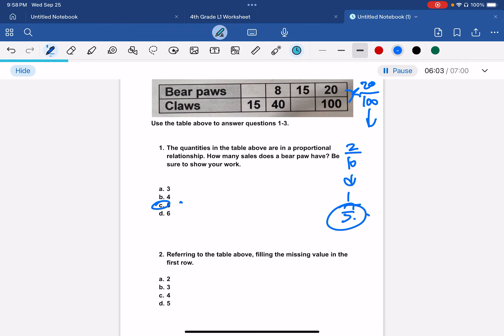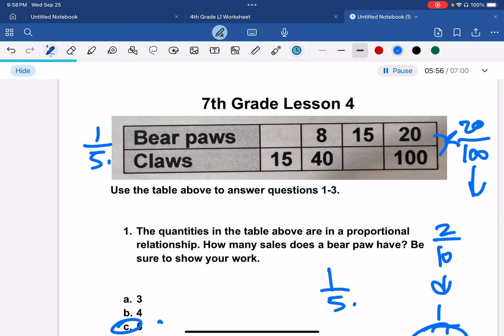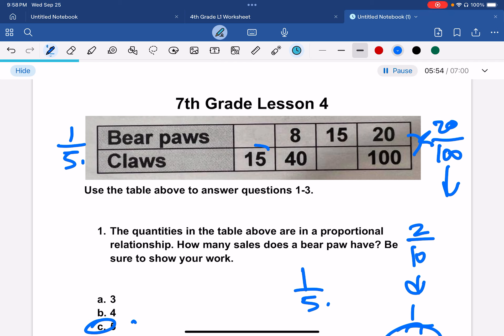Referring to the table above, fill in the missing value in the first row. Okay, so we know that the ratio is 1 over 5, so we can just plug this in.